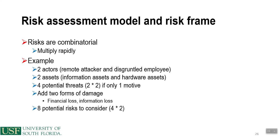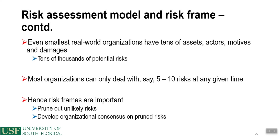Risks are combinatorial — they multiply rapidly. For example, with two actors (a remote attacker and a disgruntled employee) and two assets (information assets and hardware assets), there are four potential threats (two times two) with one motive. Adding two forms of damage (financial loss and information loss) gives eight potential risks. Even the smallest real-world organization can have tens of assets, actors, motives, and damages, resulting in tens of thousands of potential risks. Most organizations can only deal with five to ten risks at a given time. Risk frames are therefore very important — prune out unlikely risks and develop organizational consensus on prioritized risks.